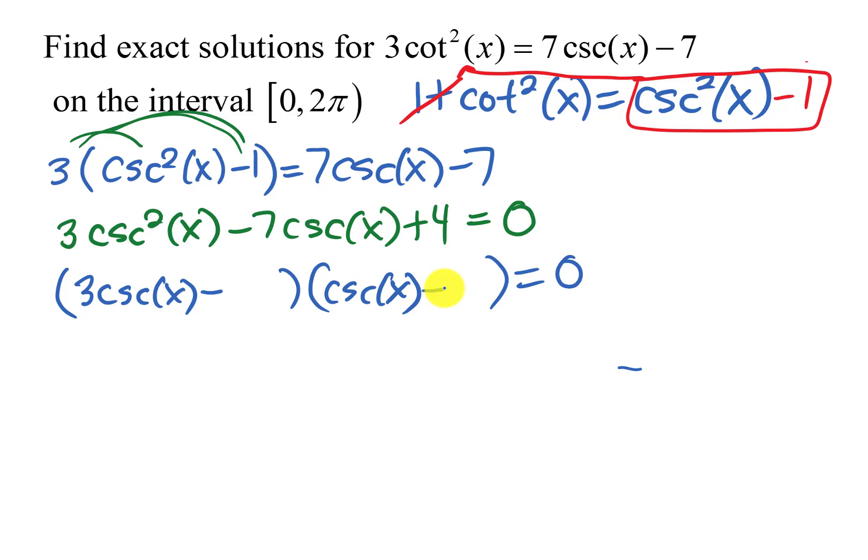To get a positive end but a negative middle, both signs would need to be negative. And if I put the 4 here and the 1 here, that's going to give me the correct middle. Outers are negative 3 cosecant x and inners are negative 4 cosecant x. There's my negative 7.